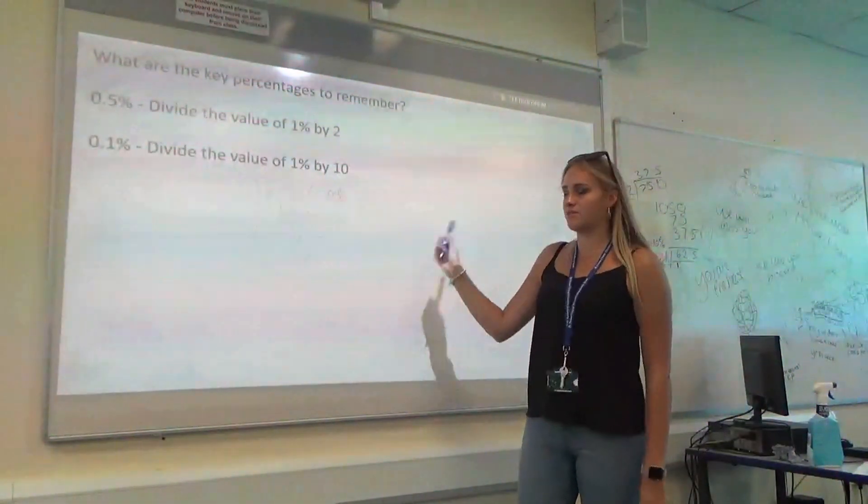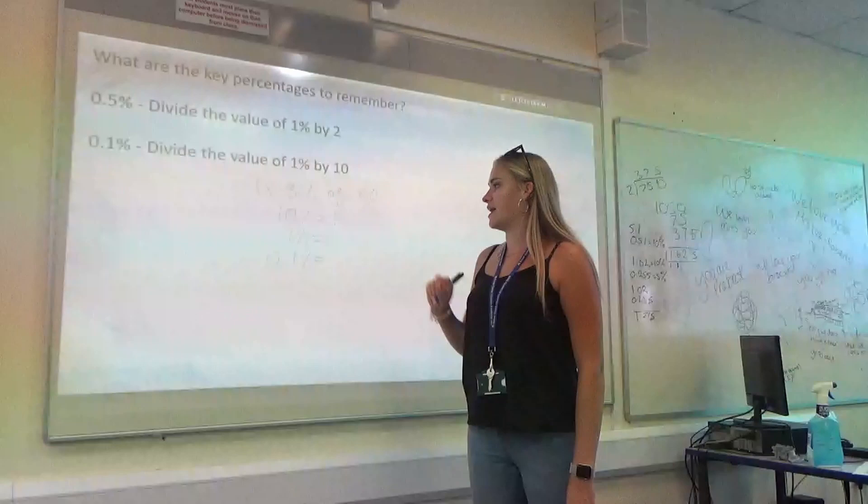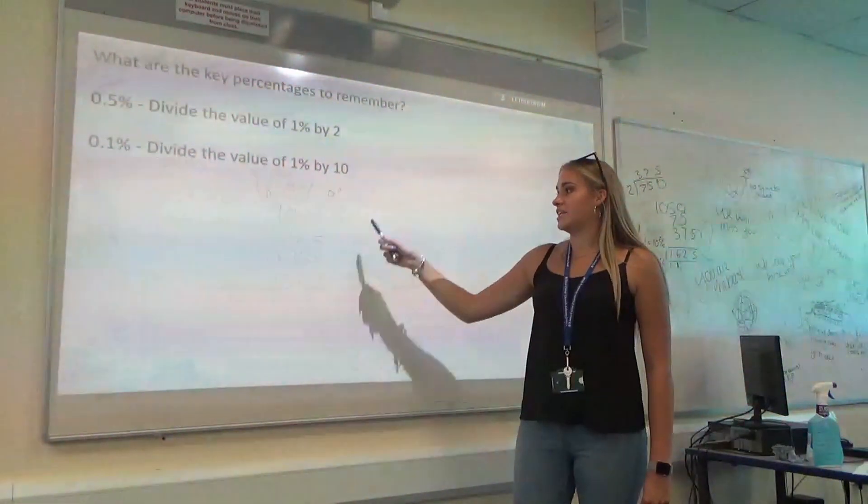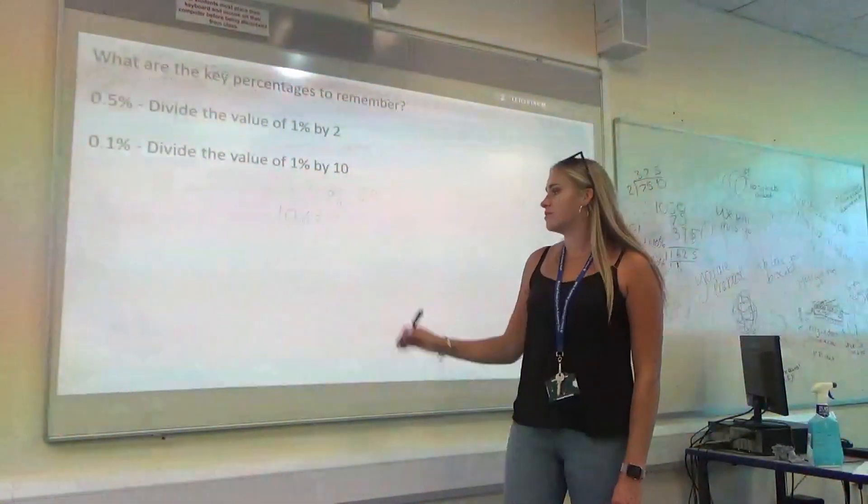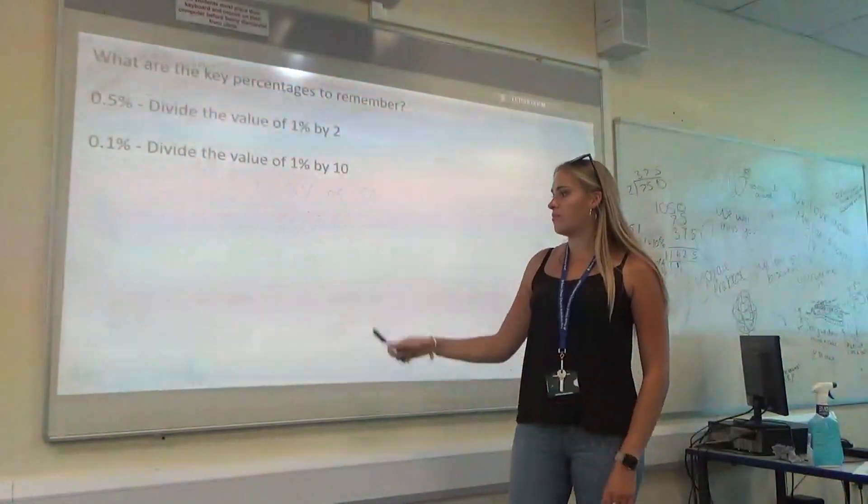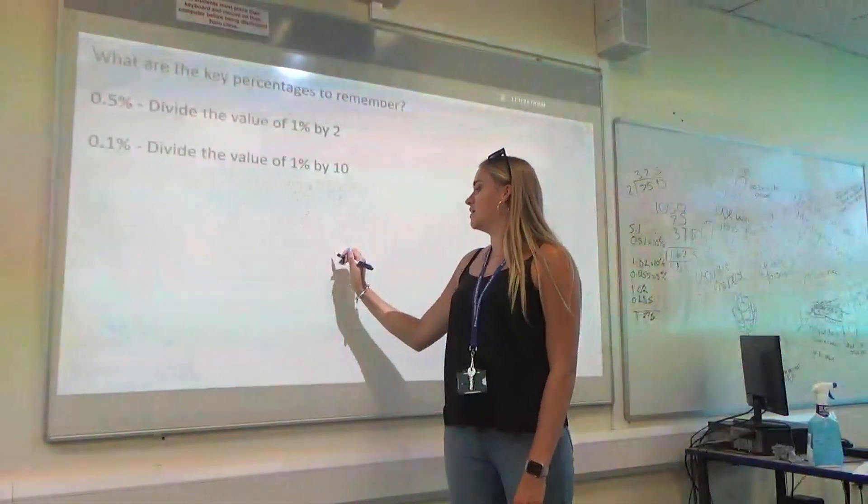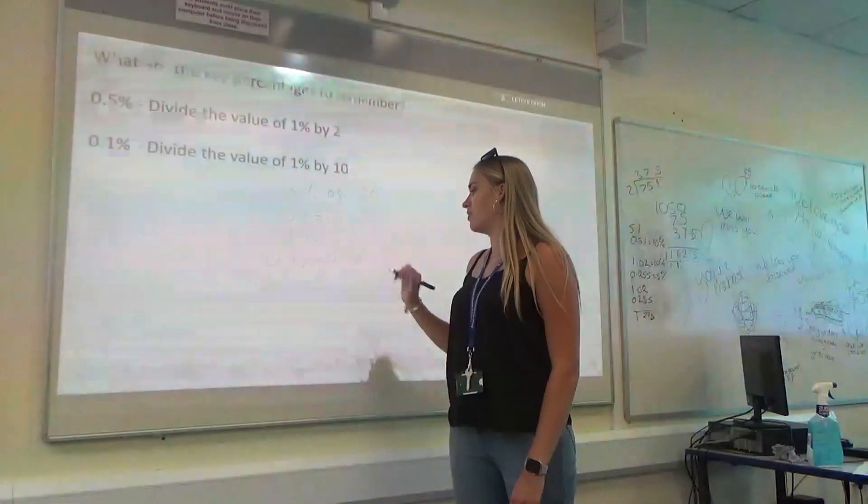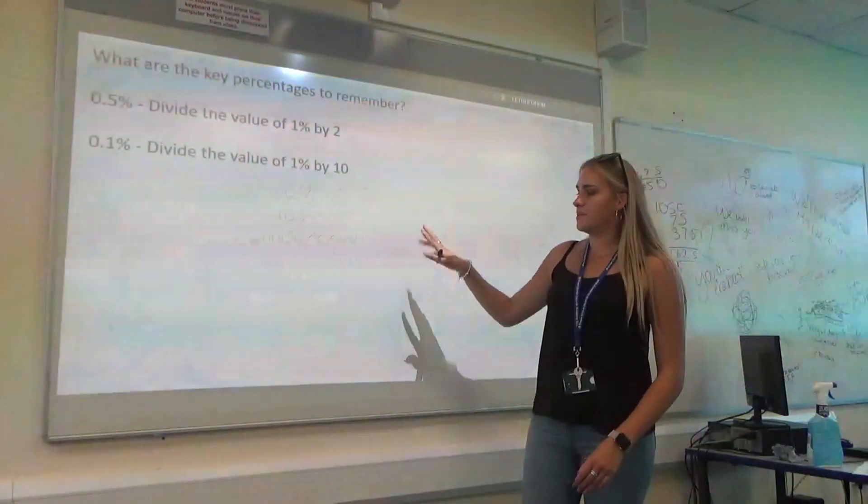So, 10%. We know nice and easy. Divide by 10. We're going to get 8. 1%. I need to divide my 8 by 10. So, I get 0.8. And then again, for 0.1%, I'm going to divide my 0.8 by 10. And I'm going to get 0.08. Now, I've got these base percentages.